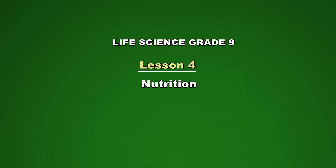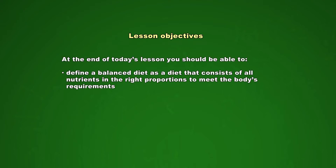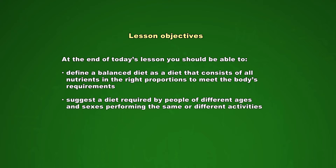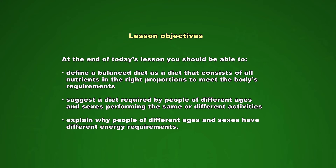Our learning objectives: learners should be able to define a balanced diet as a diet that consists of all nutrients in the right proportions to meet the body's requirements. Suggest a diet required by people of different ages and sexes performing the same or different activities. Explain why people of different ages and sexes have different energy requirements.